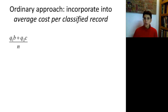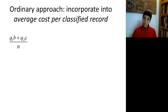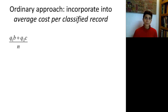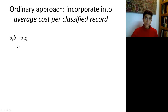The ordinary and general approach, which applies to any classification method not only discriminant analysis, would be to incorporate these costs directly into some kind of a cost measure. One such measure is called the average cost per classified record — for every new record you classify, what is the cost on average? We compute this by multiplying the cost of misclassifying a C1 record times the number misclassified as C1, plus the cost of misclassifying a C2 record times the number misclassified as C2, then dividing by the total sample.